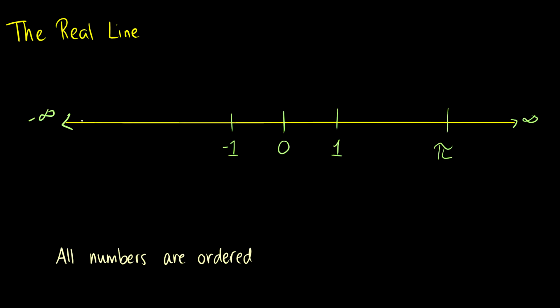So for instance negative 10 is going to be smaller than negative 1. Between 0 and 1 is going to be the number 1 half. Between 0 and 1 half is going to be the number 1 fourth and basically in between the numbers 1 and 1 fourth there's going to be an infinite amount of numbers.